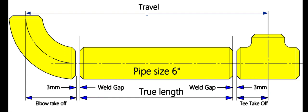The travel length is given in the drawing, and the standard weld gap is three millimeters. If the fittings are available, we can measure the takeoff physically. If you don't have the fittings, you need a pipe fittings dimensional chart like this one.